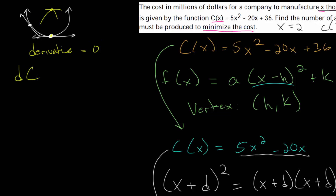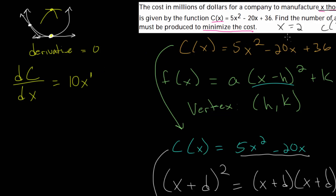To take the derivative of the cost function with respect to x, we use the power rule: take the exponent, decrease it by one, and bring the exponent down to multiply by the existing coefficient. So we bring the 2 down — 2 times 5 is 10 — and reduce the exponent to 1. For the next term, 1 times negative 20 is minus 20, and x to the zero is just 1, so we get minus 20. The derivative of the constant 36 is just zero, since a constant never changes.